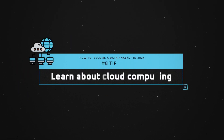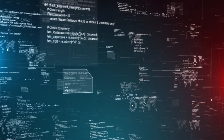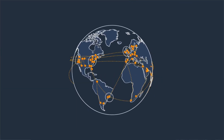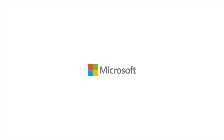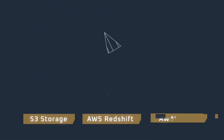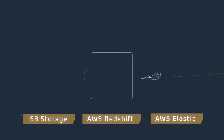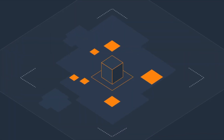Tip number eight is to learn cloud computing. We've seen the rise of cloud computing, with more companies — especially startups — going cloud first. At a basic level, learn about AWS, GCP, or Microsoft Azure, the three biggest cloud providers. If you choose AWS, learn what S3 storage, Redshift, and Elastic are. For a stretch objective, create your own cloud instance, push data into the cloud, and build a pipeline to visualize data in Power BI or Tableau, or run SQL scripts to retrieve data.